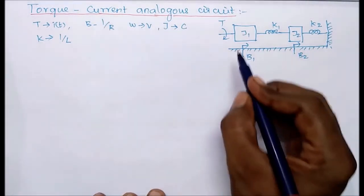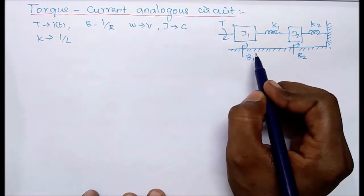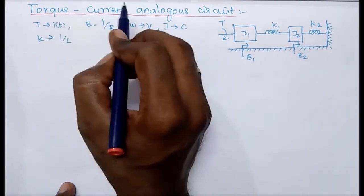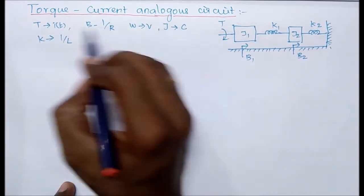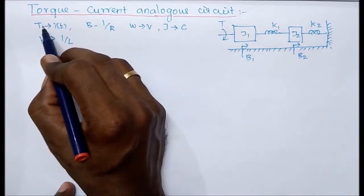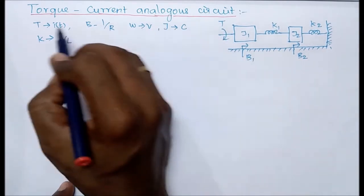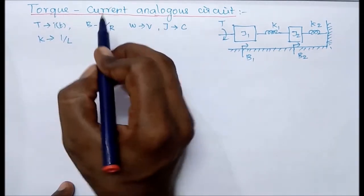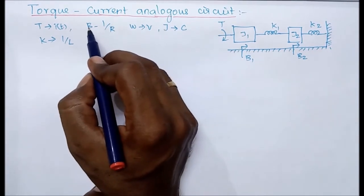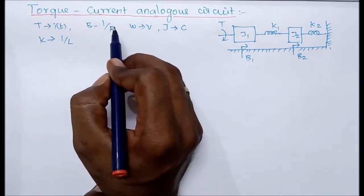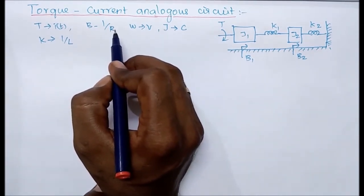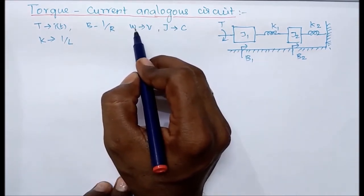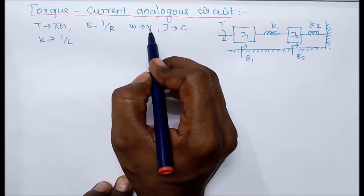Next, torque-current analogies. This is the given mechanical rotational system, and these are all the torque-current analogy equivalents. For example, in the mechanical rotational system, the input is torque, but its electrical equivalent is current. For dashpot (B) in the rotational system, we use one-over-resistor as the electrical equivalent. For omega, meaning angular velocity, the equivalent is voltage in the electrical circuit.